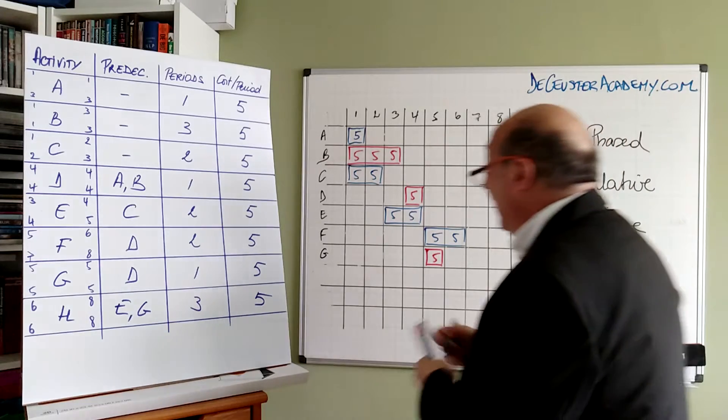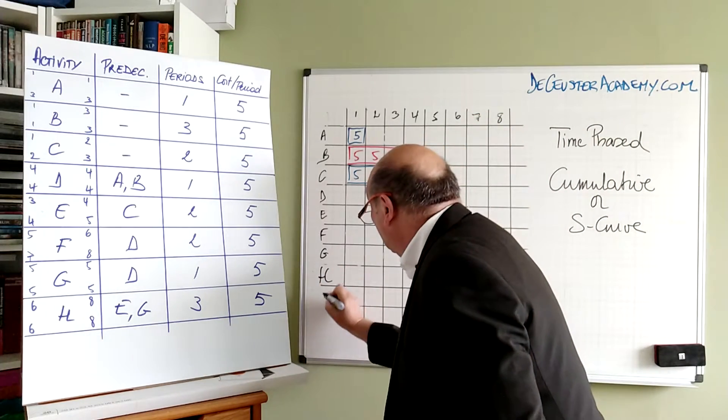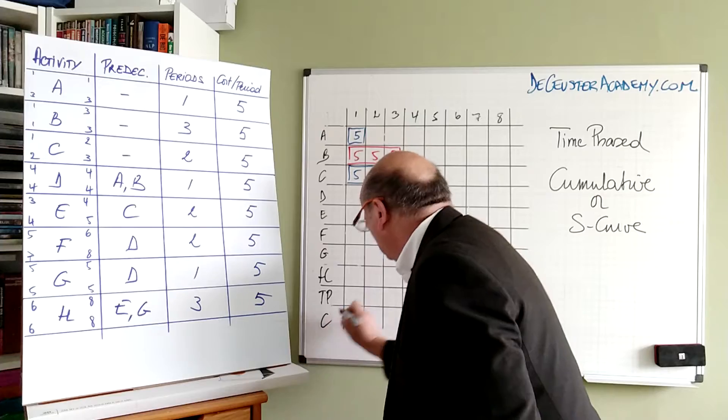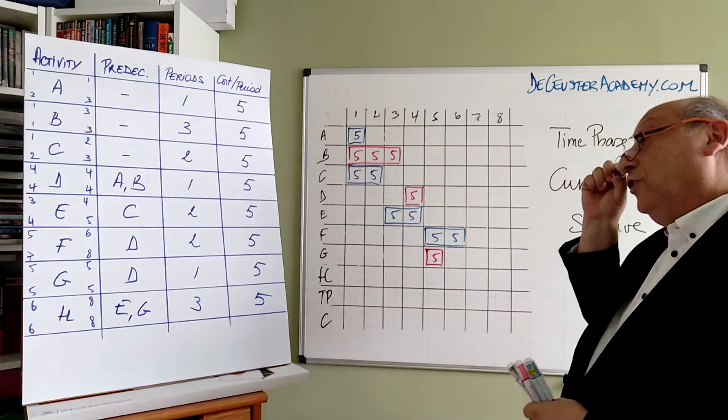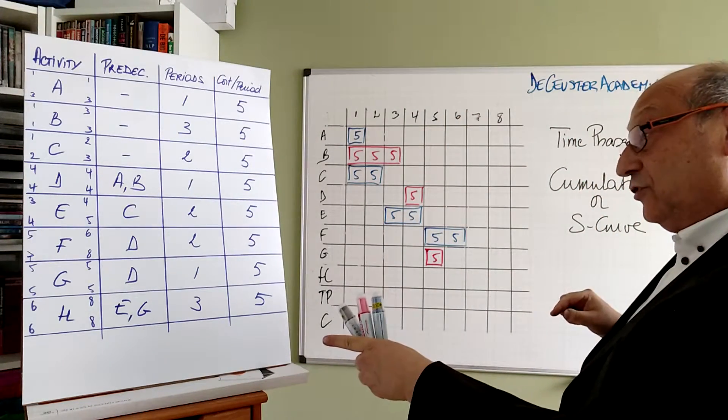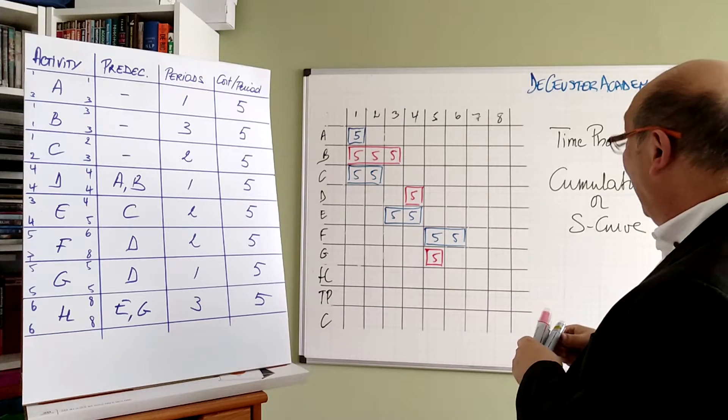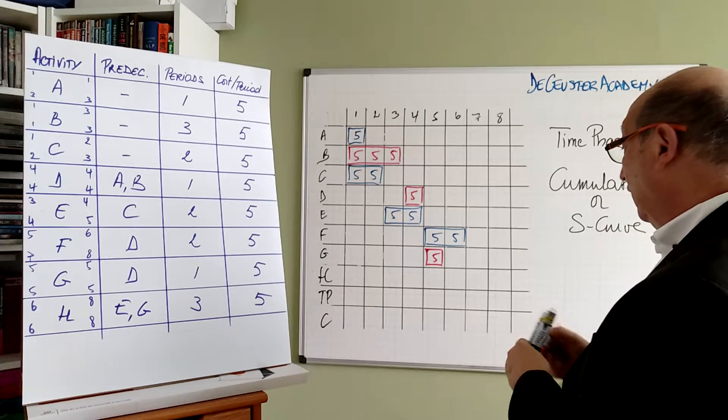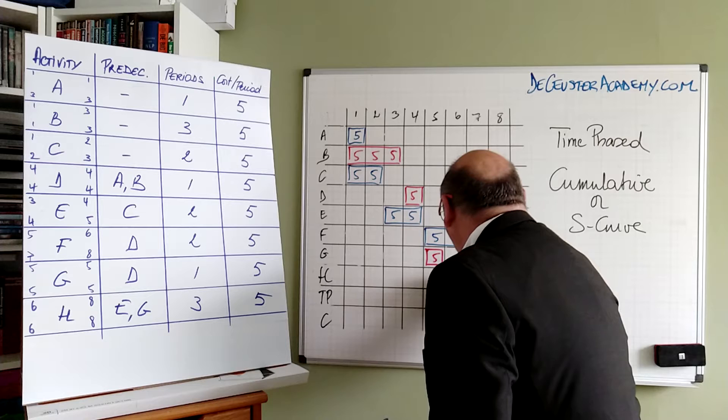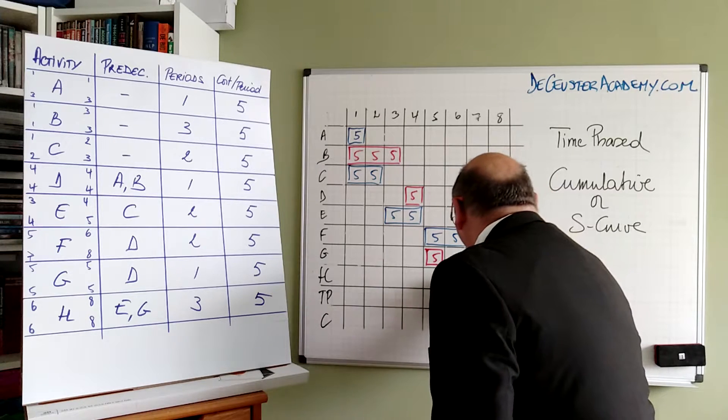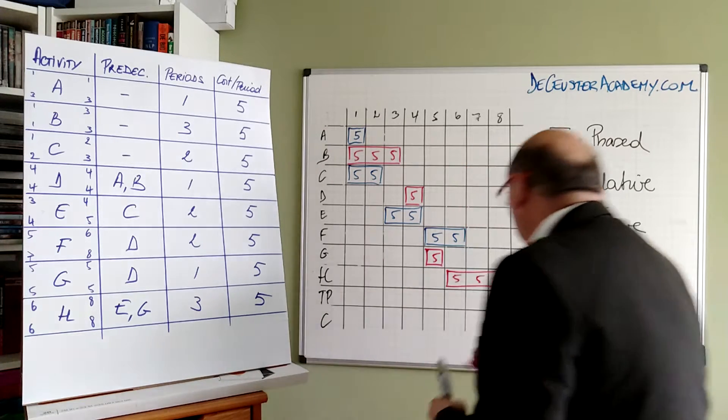We find H in the time-phased and cumulative budget. So now H is 3 periods from 6 till 8. And we find the last element here, which is for H. Also 5, 5, and 5.